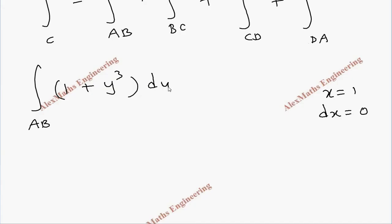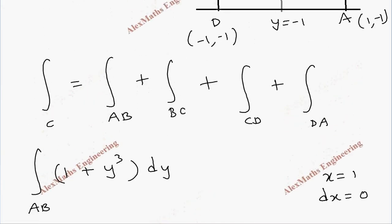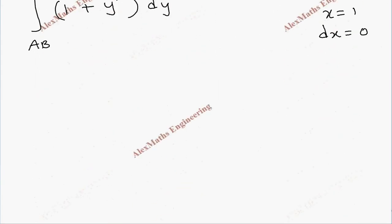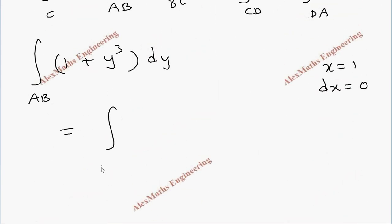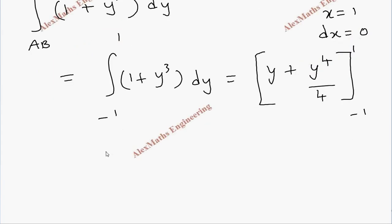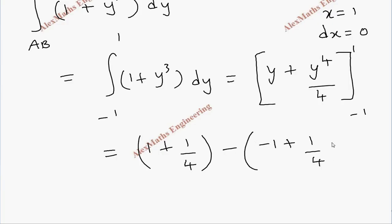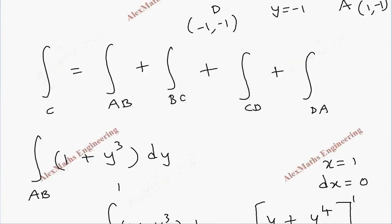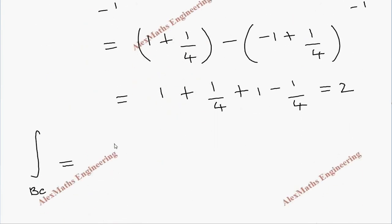The limit for AB runs from y = −1 to y = 1. Integrating (1 + y³) dy gives [y + y⁴/4] from −1 to 1. Upper limit: 1 + 1/4; lower limit: −1 + 1/4. Subtracting gives 2. So the integral over AB equals 2.